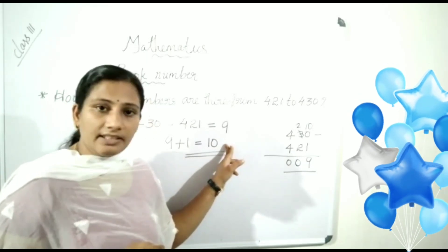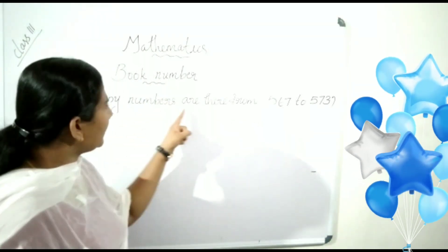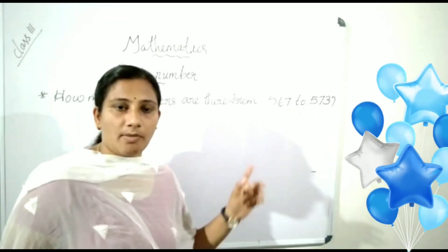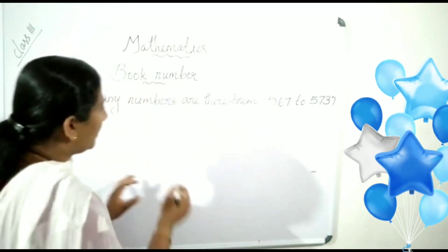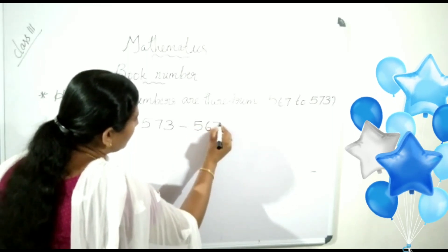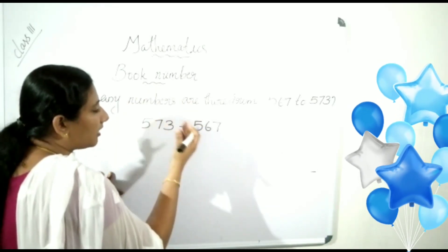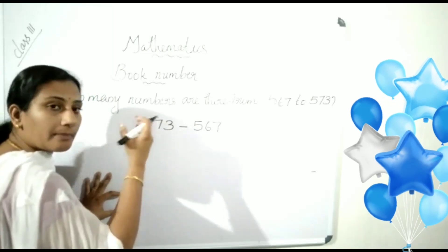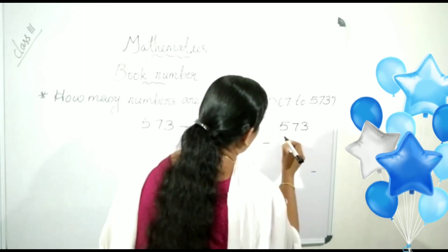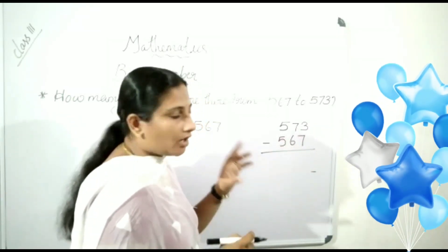All of you understand this method. Let us look at one more example. How many numbers are there from 567 to 573? How many numbers are there? Let us find. First, 573 minus 567, because 573 is the big number. We want to subtract the small number from the big number.